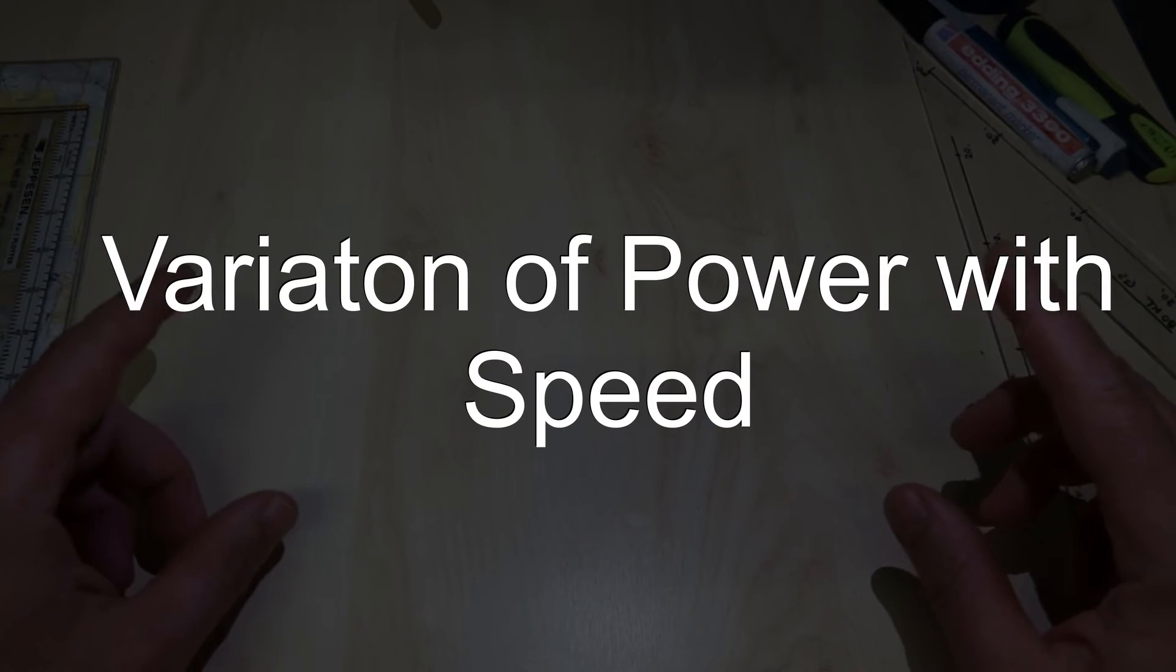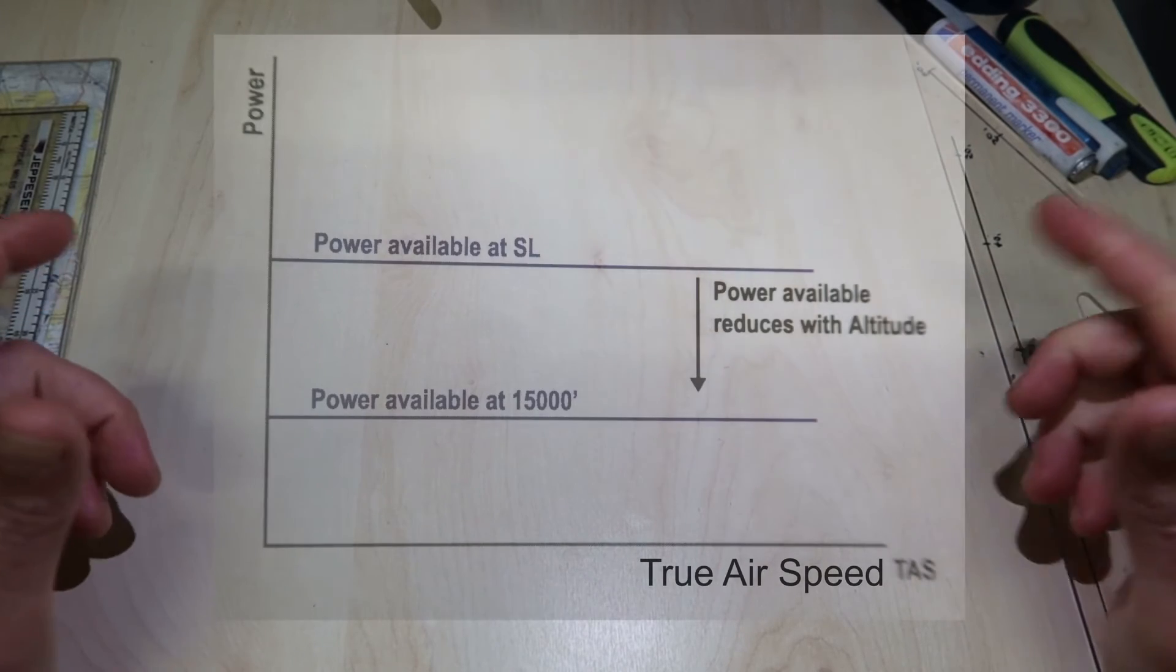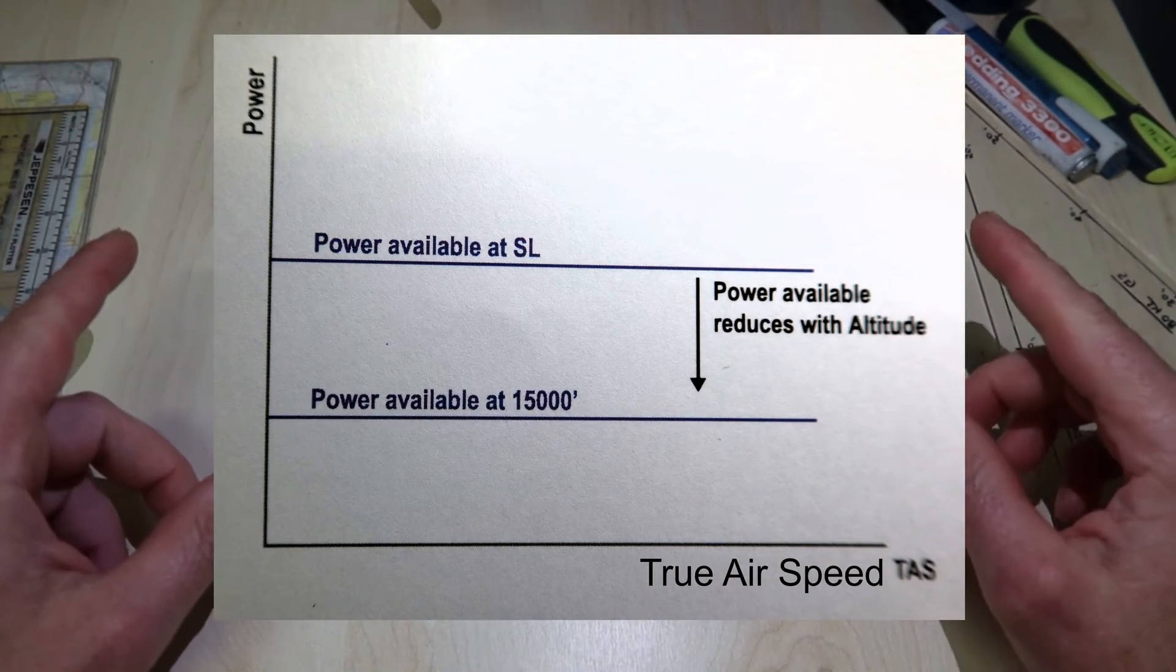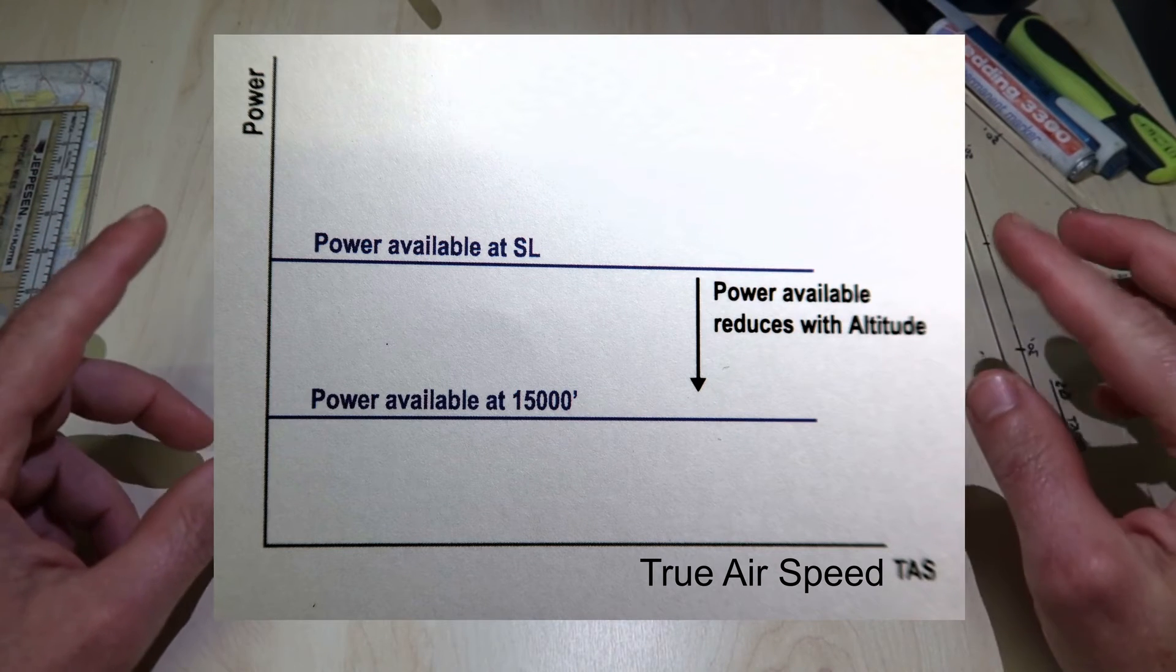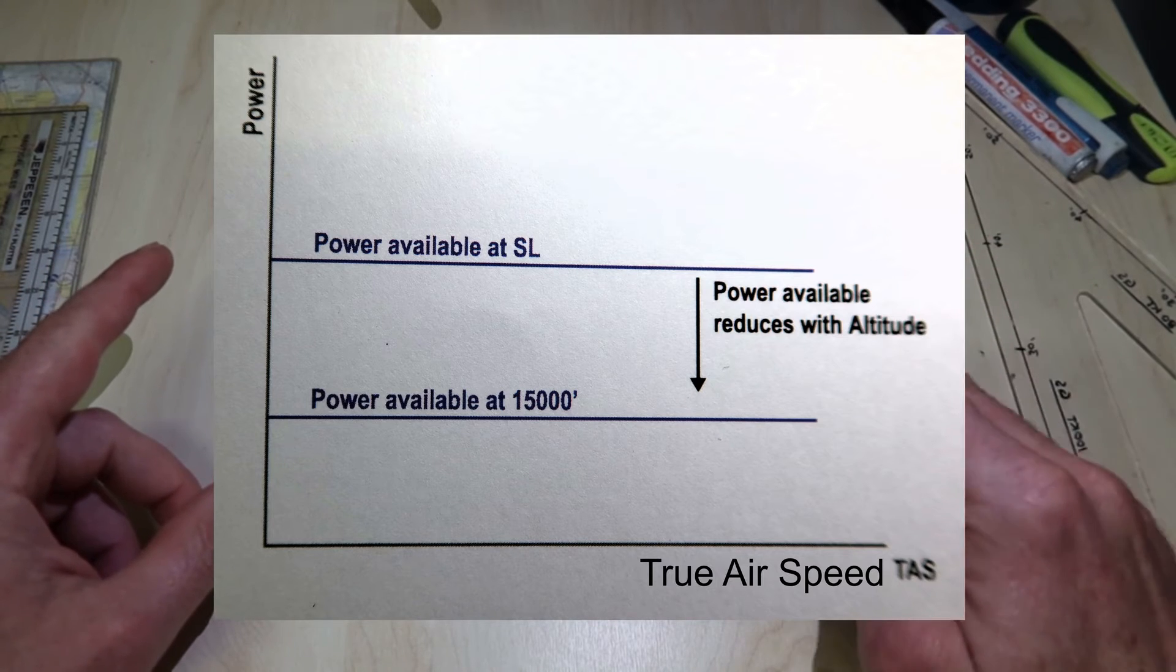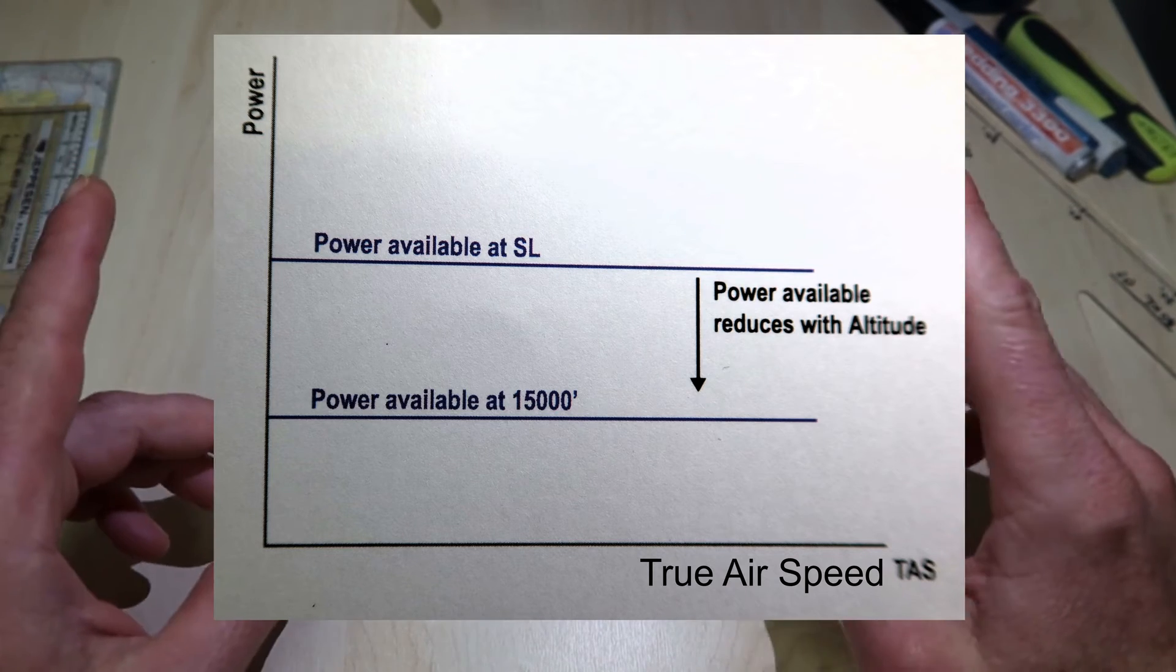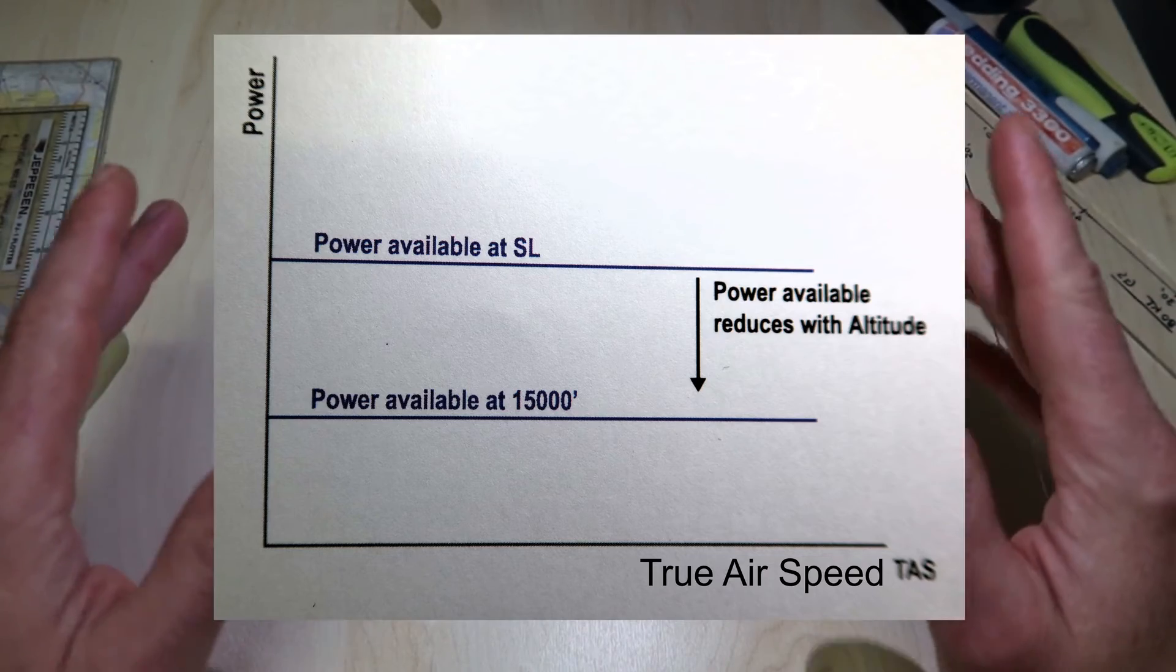Variation of power with speed. Gas turbine thrust will decrease with increasing forward speed, but because power is thrust multiplied by air speed, the power output stays nearly level. In fact, it actually increases slightly as speed increases, but because the increase is small, it is conventional to show the power available line for a helicopter as a horizontal line.